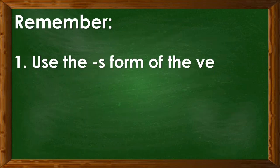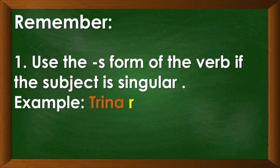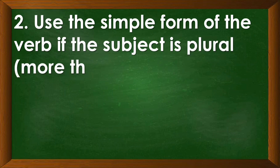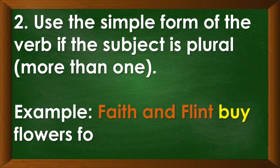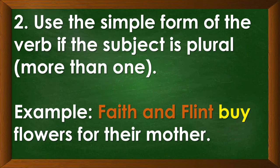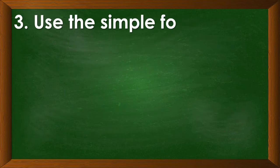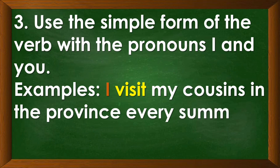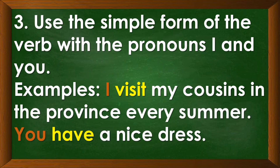Now let us remember what we have discussed before. Number one: use the S form of the verb if the subject is singular. Example: Trina reviews her lesson every night — Trina is singular, that is why we use the S form of the verb. Number two: use the simple form of the verb if the subject is plural or more than one. Fate and Flint buy flowers for their mother — Fate and Flint is plural, that is why we use the simple form of the verb buy. The pronouns I and you also take the simple form of the verb. Example: I visit my cousins in the province every summer, and you have a nice dress.